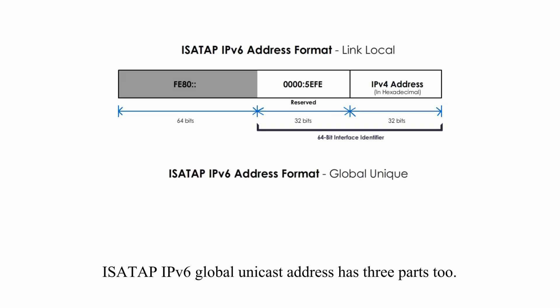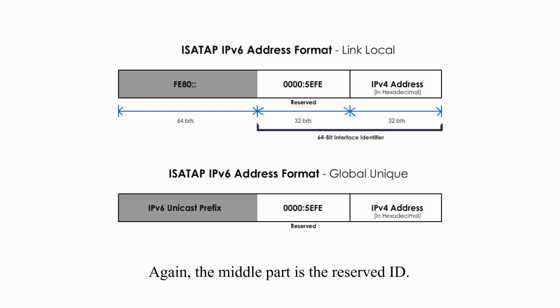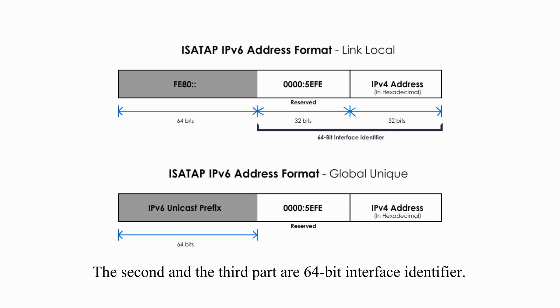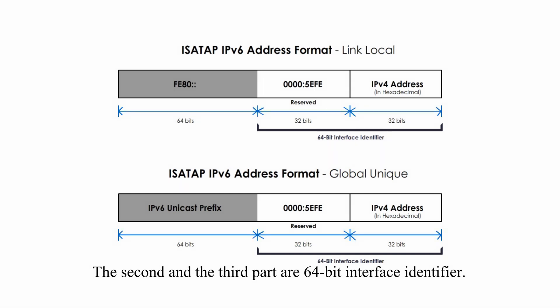The ISATAP IPv6 global unicast address has three parts too. Again, the middle part is the special reserved ID. Starting from the right side, the first part is a 64-bit unicast prefix, and the second and third parts together are the 64-bit interface identifier.